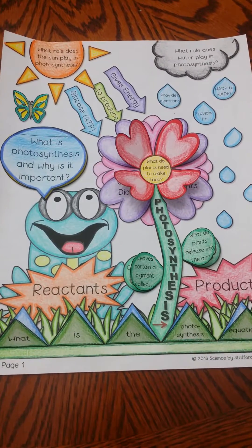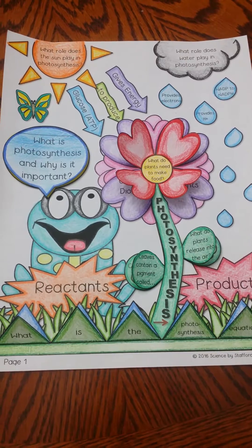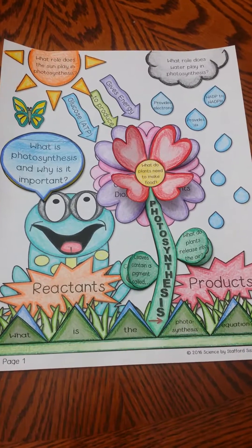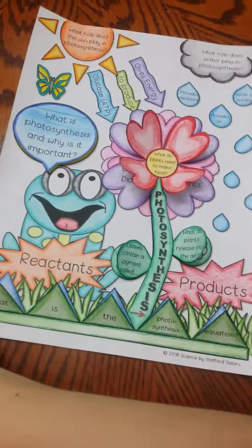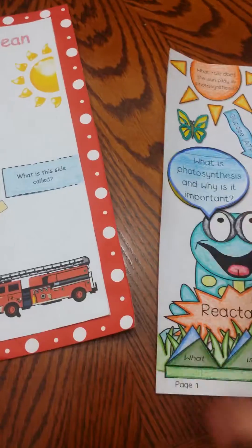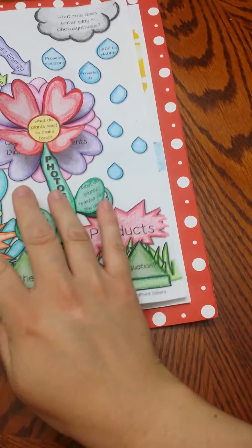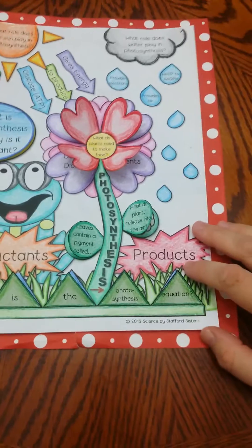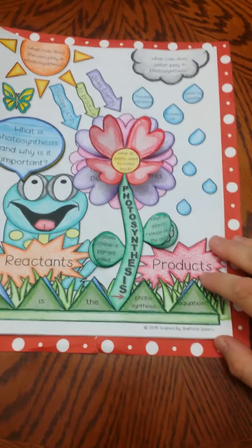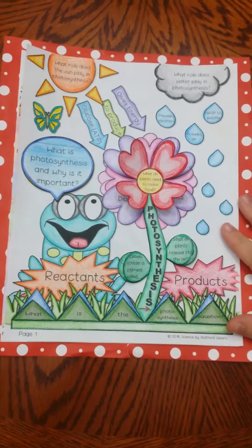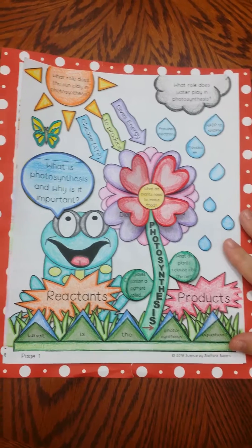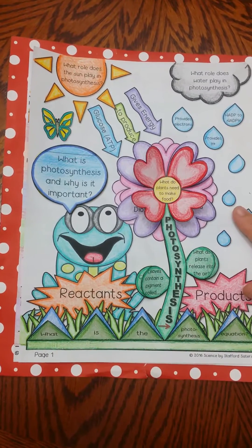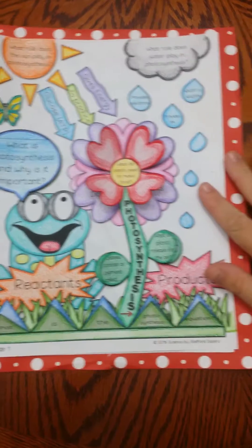Also, what's nice is you can fit this in an interactive notebook or you can also put it on construction paper. I have some construction paper here — I got this from Michaels — and you can have your students glue the construction paper underneath it so that it just gives it a little bit of color to pop.